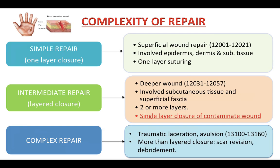This slide is about the complexity of the repair. First, simple repairs are for superficial wounds involving the epidermis, dermis, or possibly the subcutaneous tissue layer. CPT codes range from 12001 to 12021. Intermediate repairs typically involve the physician closing the subcutaneous tissue and superficial fascia — most of the time two layers. CPT codes range from 12031 to 12057.